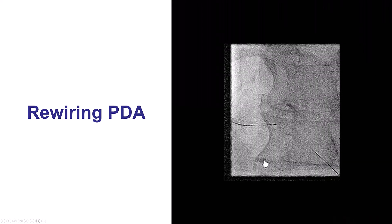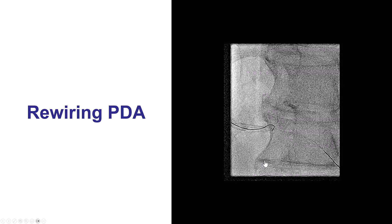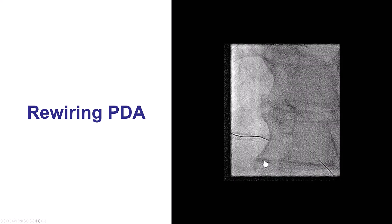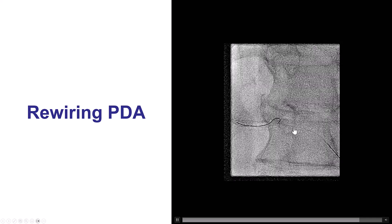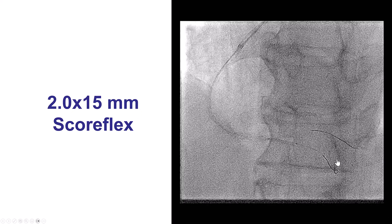So we rewired the PDA. Fortunately, rewiring was relatively easy — sometimes it can be tricky when there is significant stenosis. Trying with a standard workhorse guide wire, we were able to eventually engage the PDA and, with gentle manipulation and gentle rotation, advance the workhorse wire into the PDA.